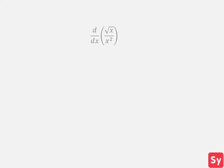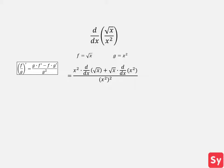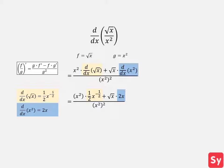Last example, we want to compute the derivative of the square root of x over x squared. We see that we are dividing a function f by a function g, so we can use the quotient rule. This equals x squared times the derivative of the square root of x, minus the square root of x times the derivative of x squared, all over x squared squared. We compute the derivatives of the square root of x and x squared, plug in these values back into the equation, and this simplifies nicely into negative 3 over 2 times x to the 5 halves, our answer.